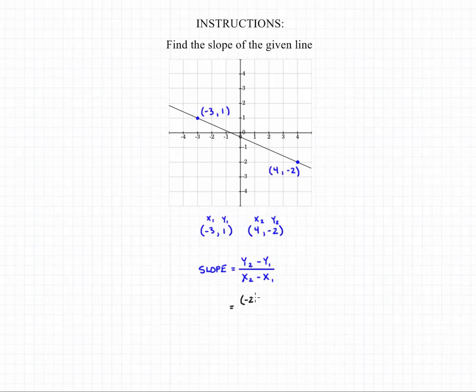If we plug in the points that we selected, we'll have (-2) minus 1 over 4 minus (-3), and that is going to give us our final answer, which is that we're dealing with a line with a slope of -3/7.